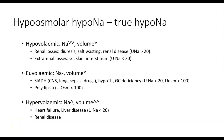One way to tell whether fluid restriction alone will be effective is by calculating the urine to serum electrolyte ratio: urine sodium plus urine potassium divided by serum sodium plus serum potassium. If this ratio is less than 0.5, the kidneys are already excreting a lot of free water, so fluid restriction will likely resolve the hyponatremia alone. In contrast, a ratio of more than 1 suggests the urine is hypertonic relative to the blood and the kidneys are not excreting much free water, meaning fluid restriction alone is unlikely to resolve the hyponatremia.